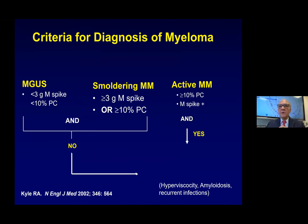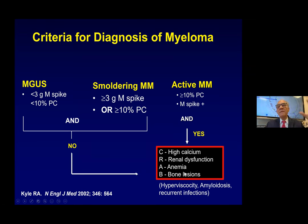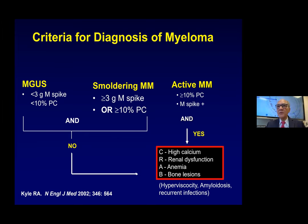Knowing that there is protein in blood and/or urine and the bone marrow is involved, when can we call a patient as having myeloma that now needs treatment, versus early stage disease — MGUS or smoldering — where we don't need to treat? This is determined by whether there is what we call end organ damage. Has myeloma affected the body? The effects on the body that we look for are high calcium, kidney dysfunction, anemia, or bone lesions. If any one of these is present, that's active myeloma and we start treatment. If none are present, those are smoldering myeloma or MGUS.